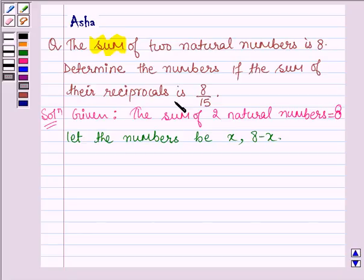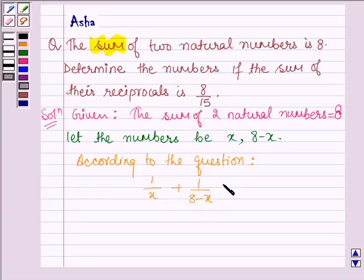Now we are further given that if we reciprocate the numbers, their sum is equal to 8/15. So according to the question, we have 1/x plus 1/(8-x) equals 8/15.